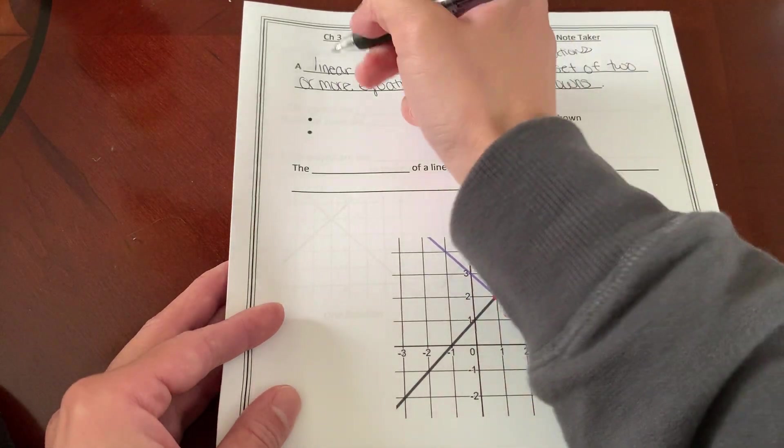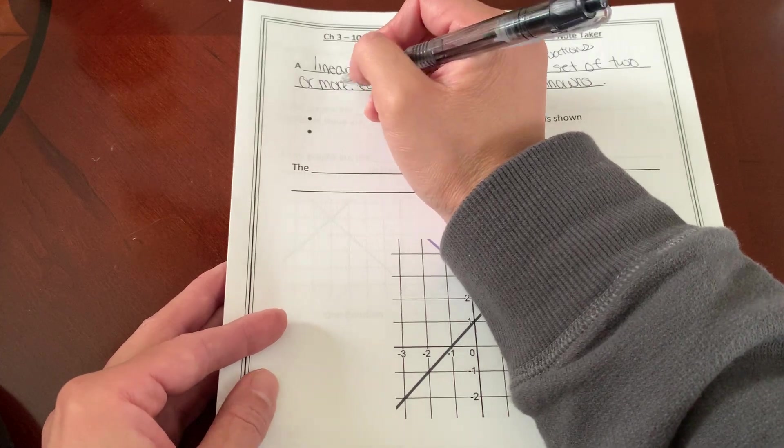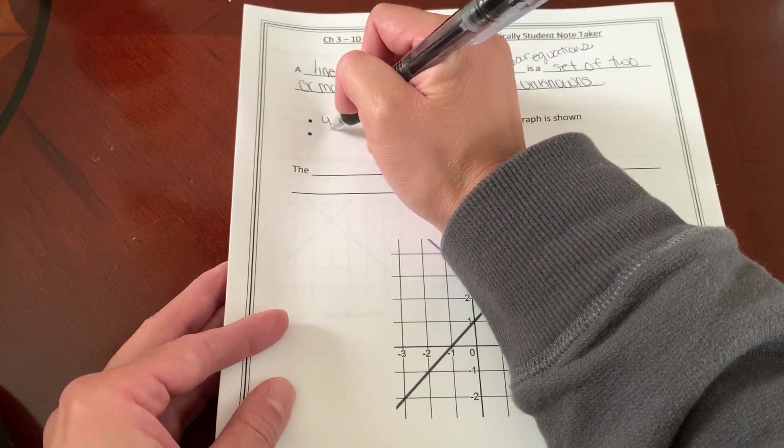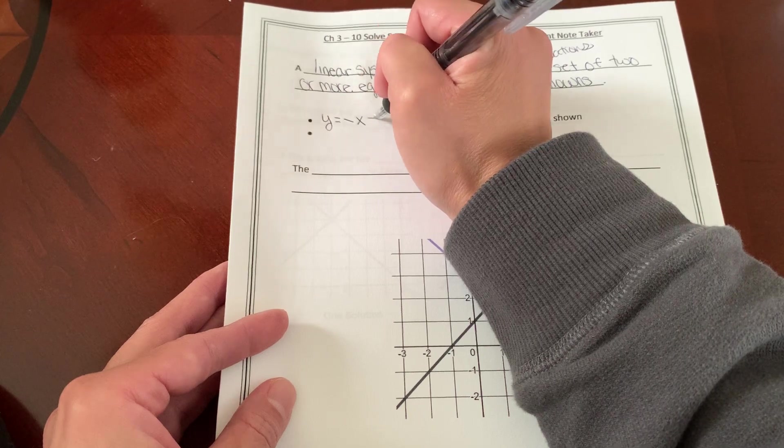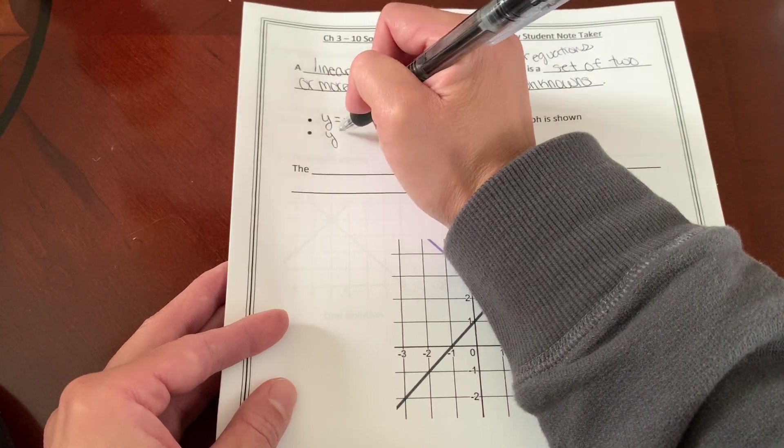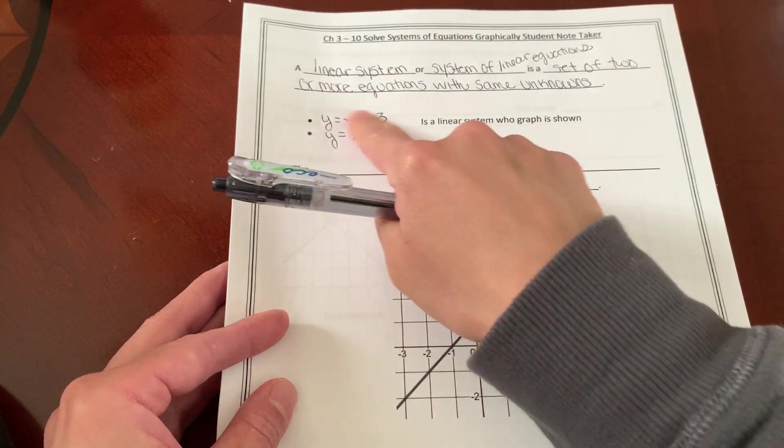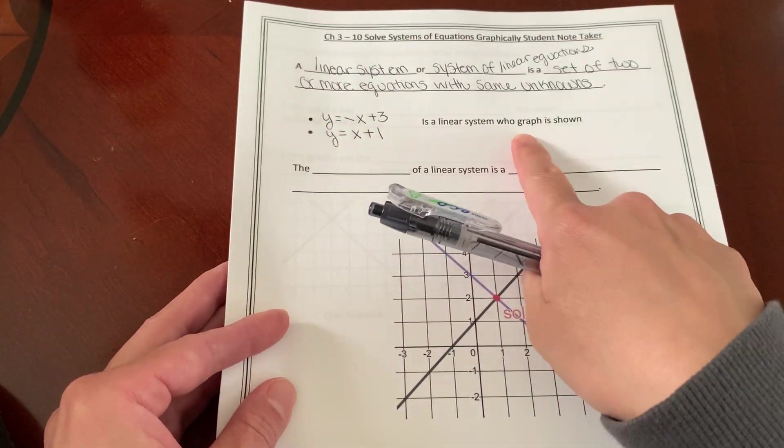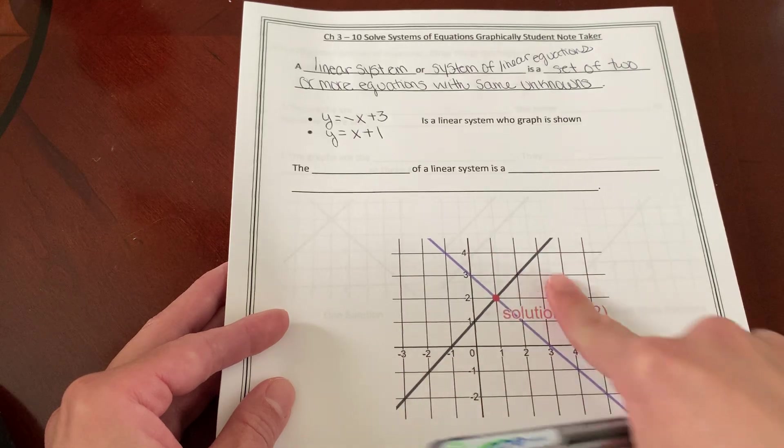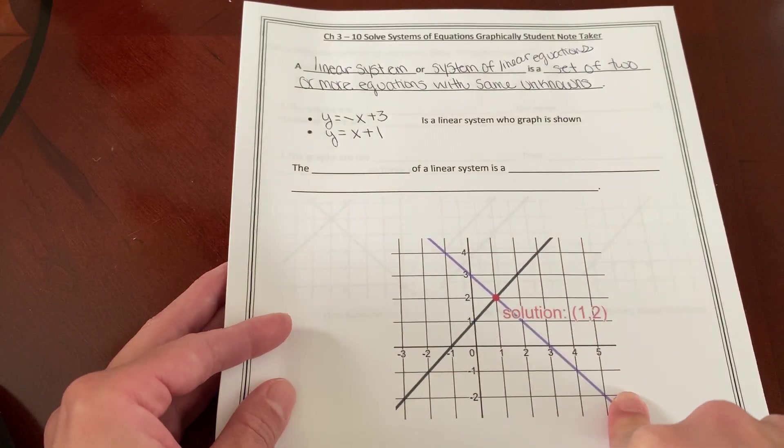I'm going to give you two examples of these equations. So I have y equals negative x plus 3, and y equals x plus 1. Both of these is a linear system whose graph is shown and the graph is down here.